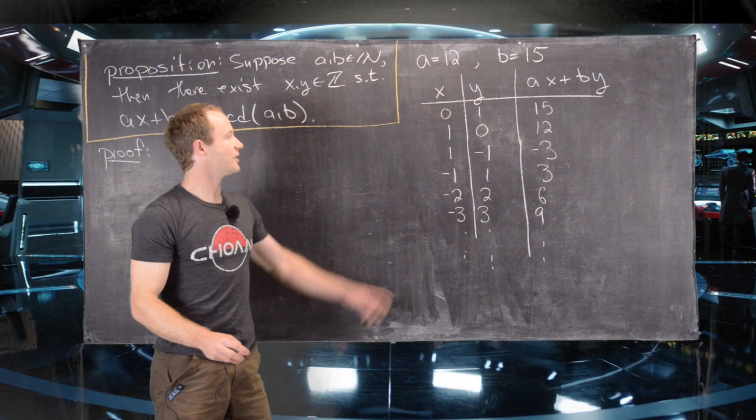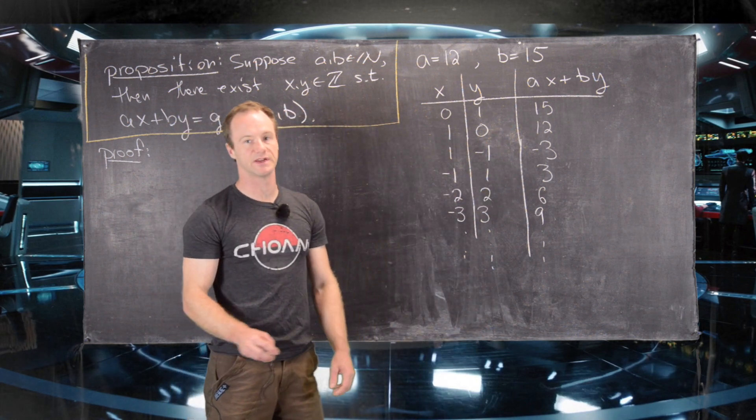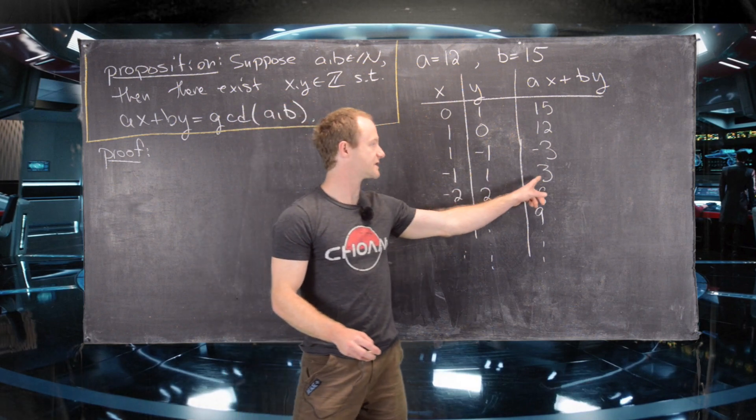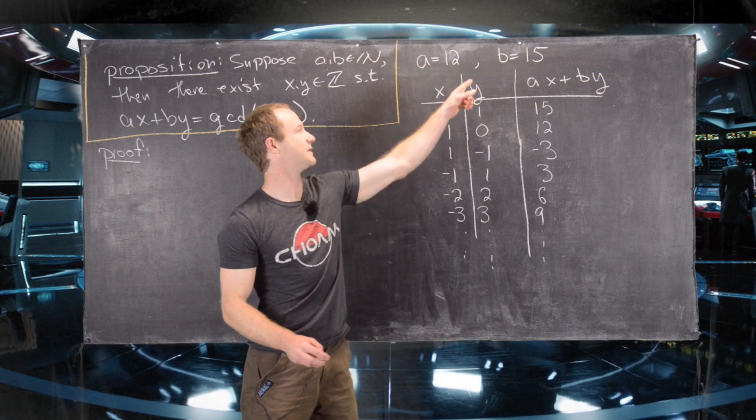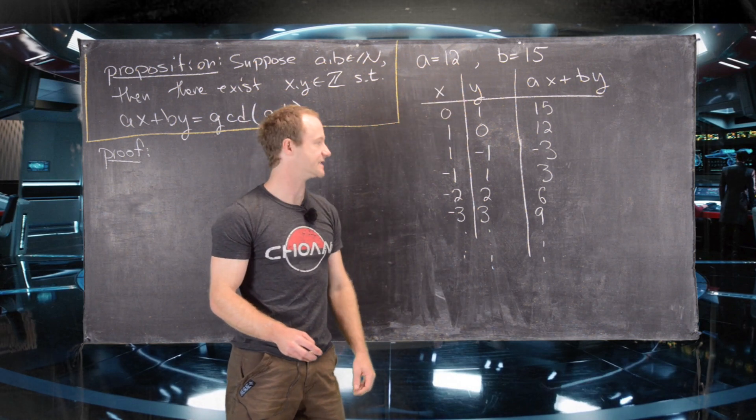So notice that we are able to achieve positive and negative numbers doing this process. And furthermore, it looks like the smallest positive number that we're able to achieve is in fact the GCD because as it's easy to check, the GCD of 12 and 15 is 3.